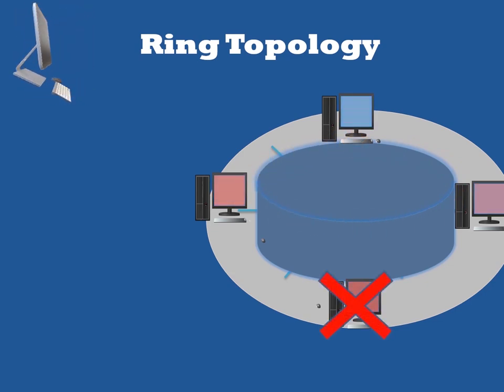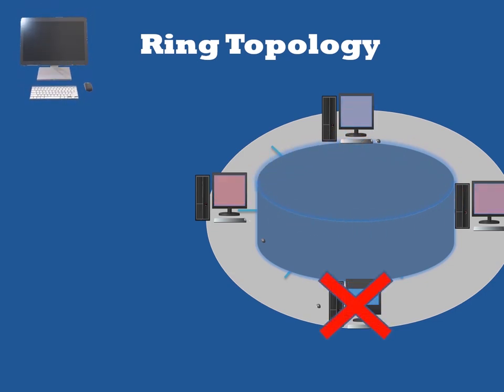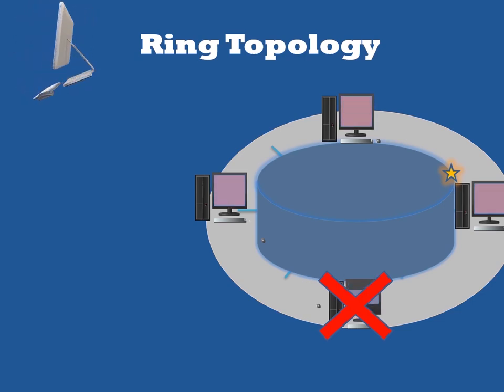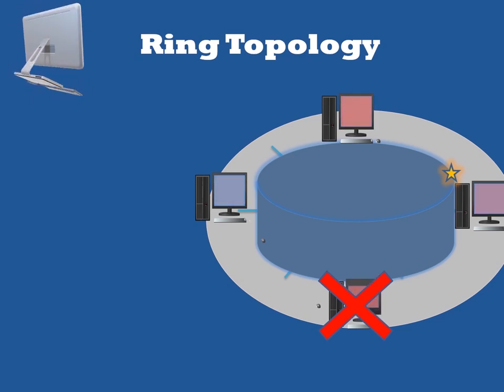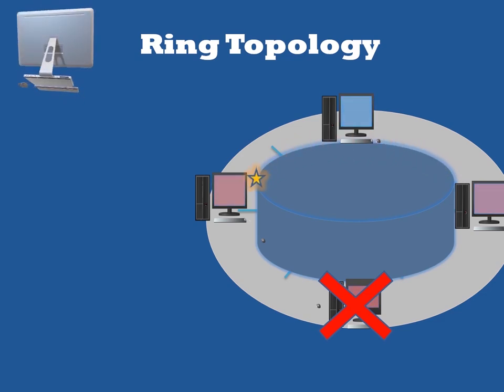Troubleshooting is tough in ring topology. Adding or deleting computers interrupts the network activity, and failure of one computer disrupts the whole network.